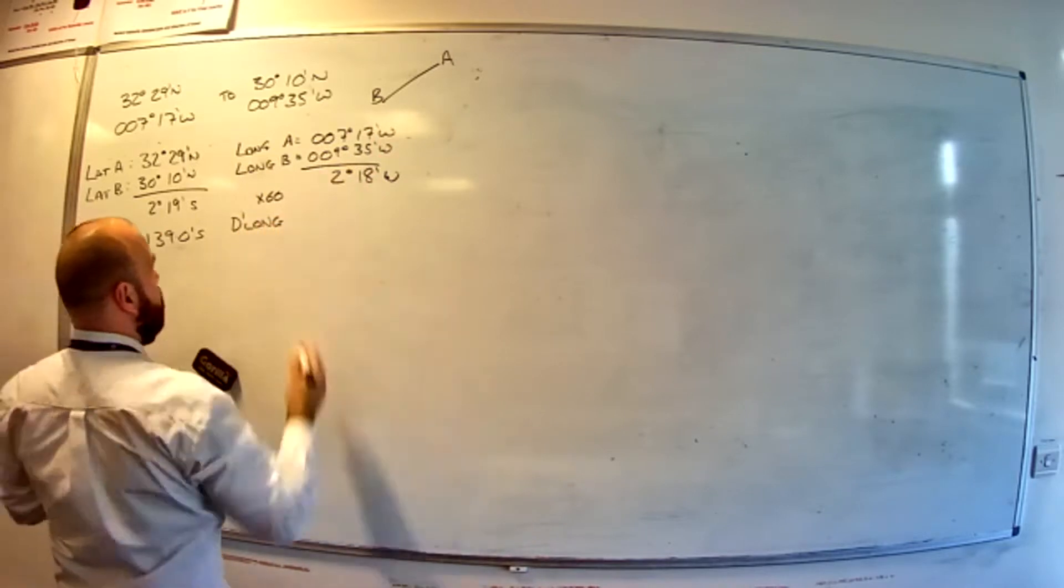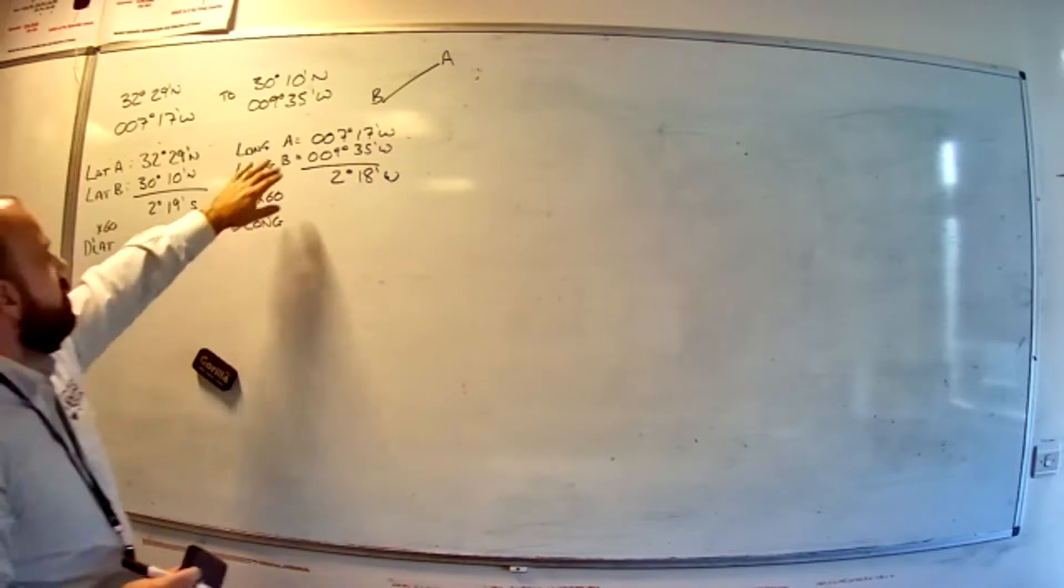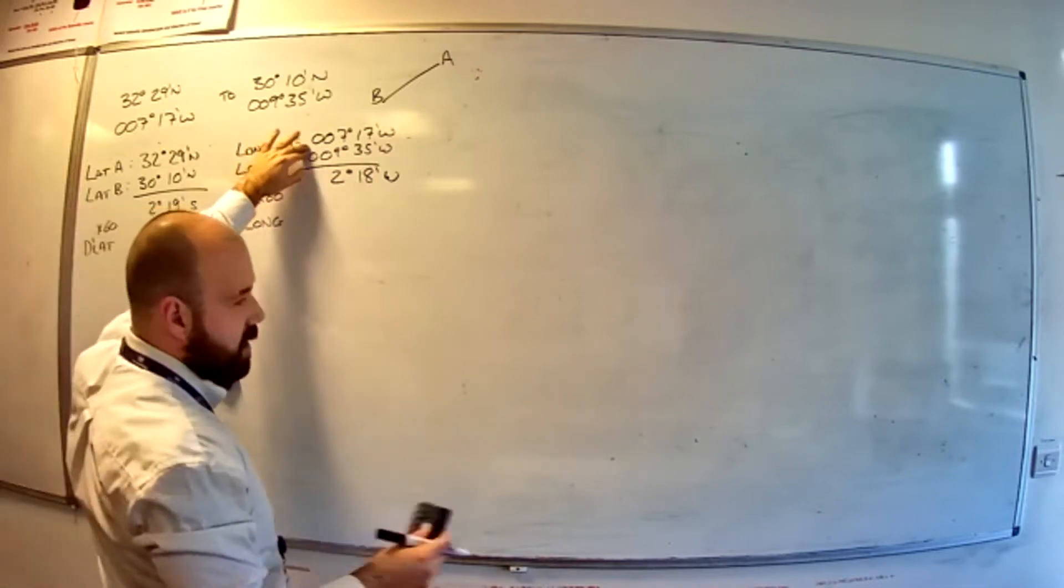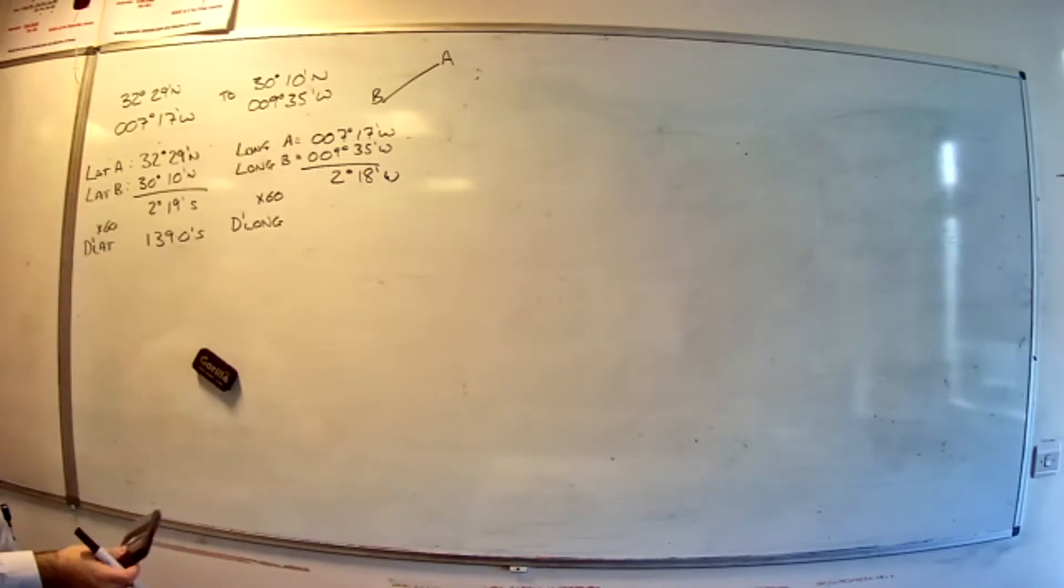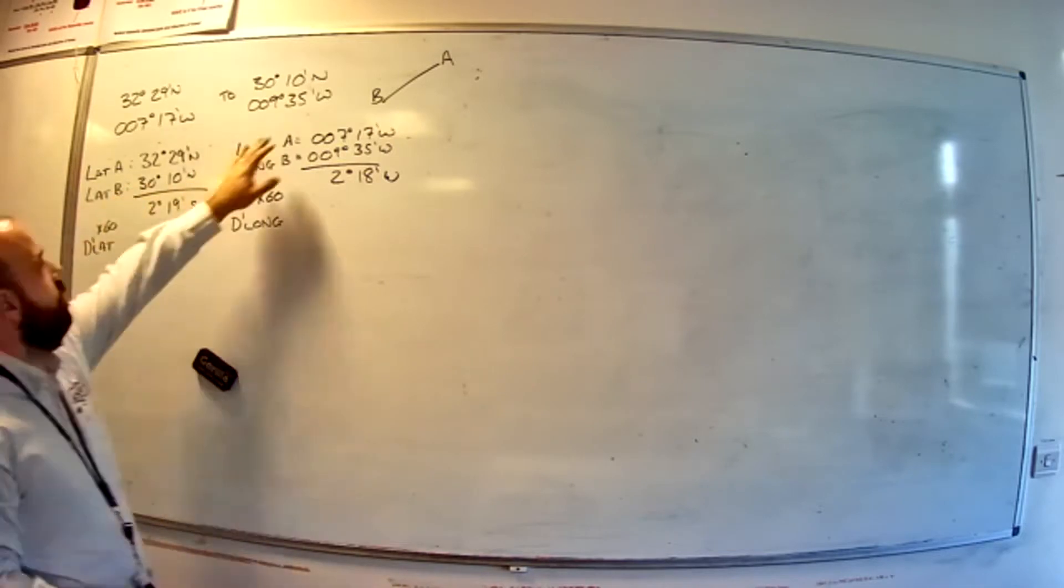Again, DLong is just difference of longitude. So same names, you're both in the western hemisphere. You need to work out the difference between them. Just do the big one minus the small one and name it in your direction of travel. So here we were going south. Here we were going west.